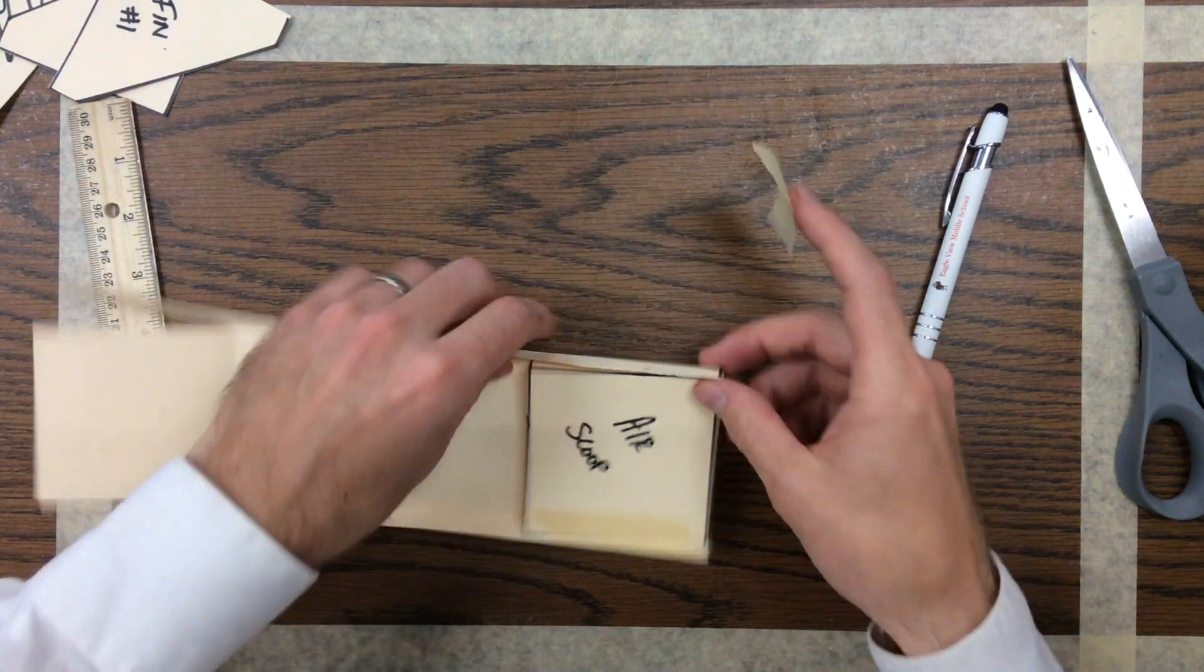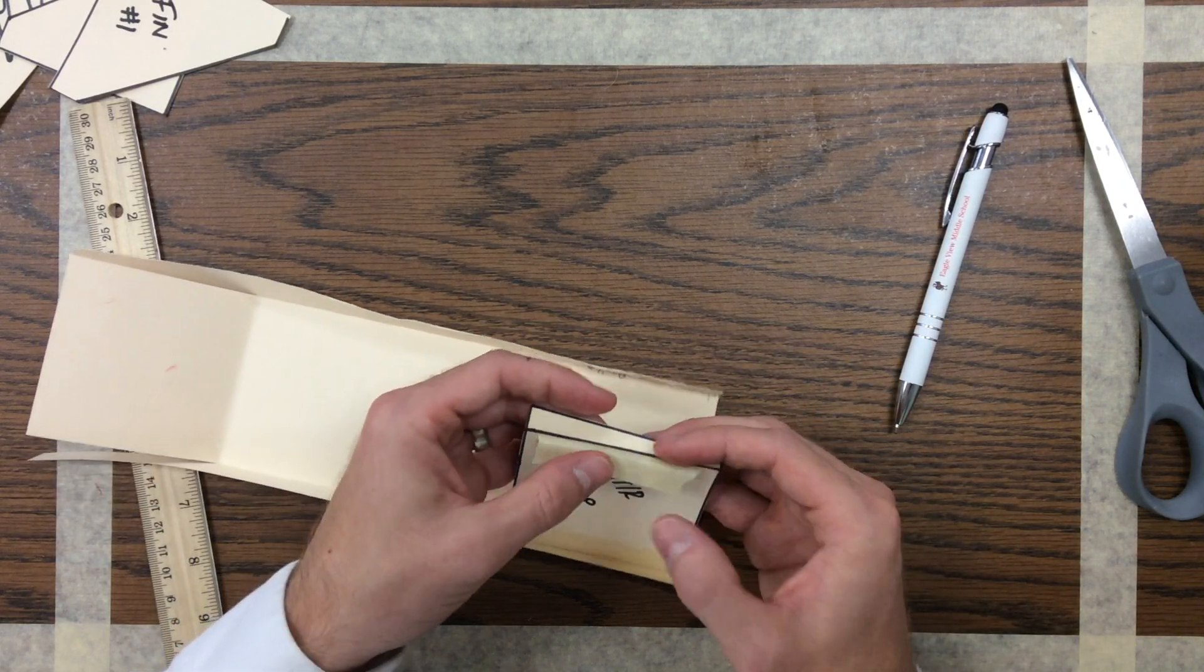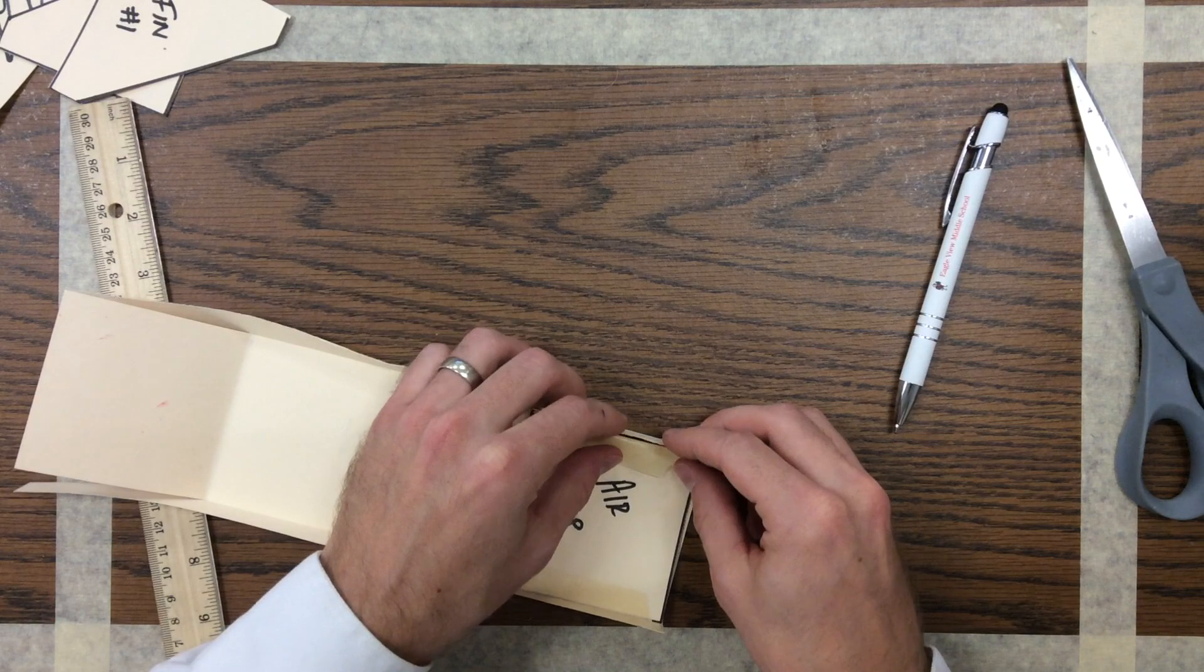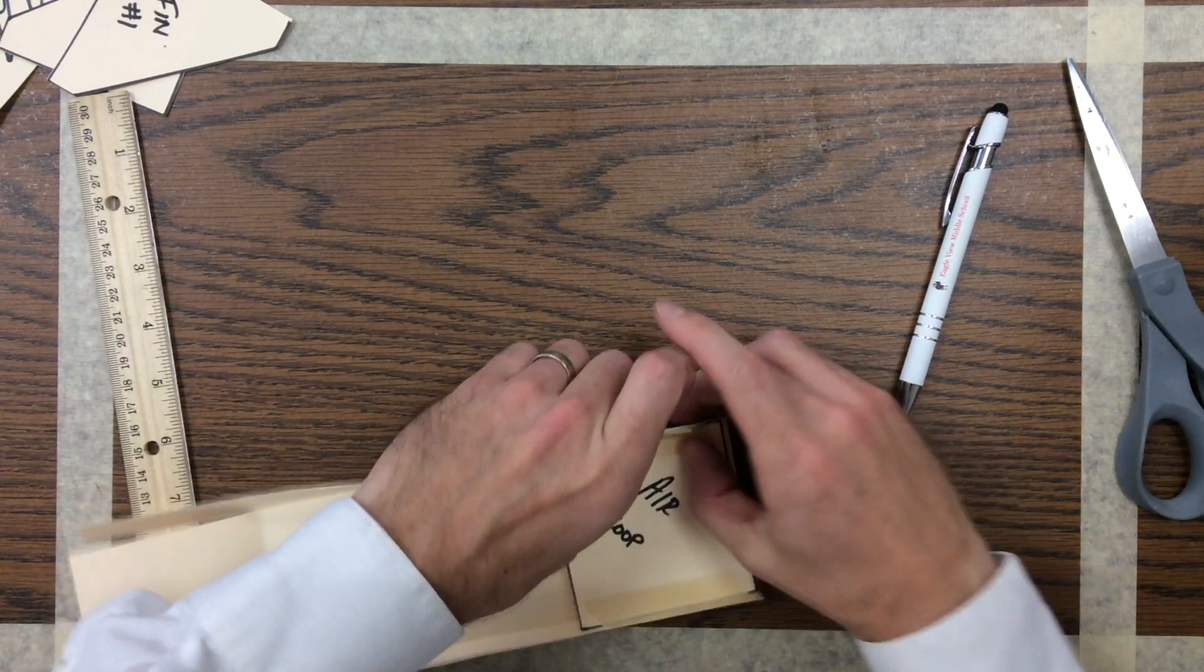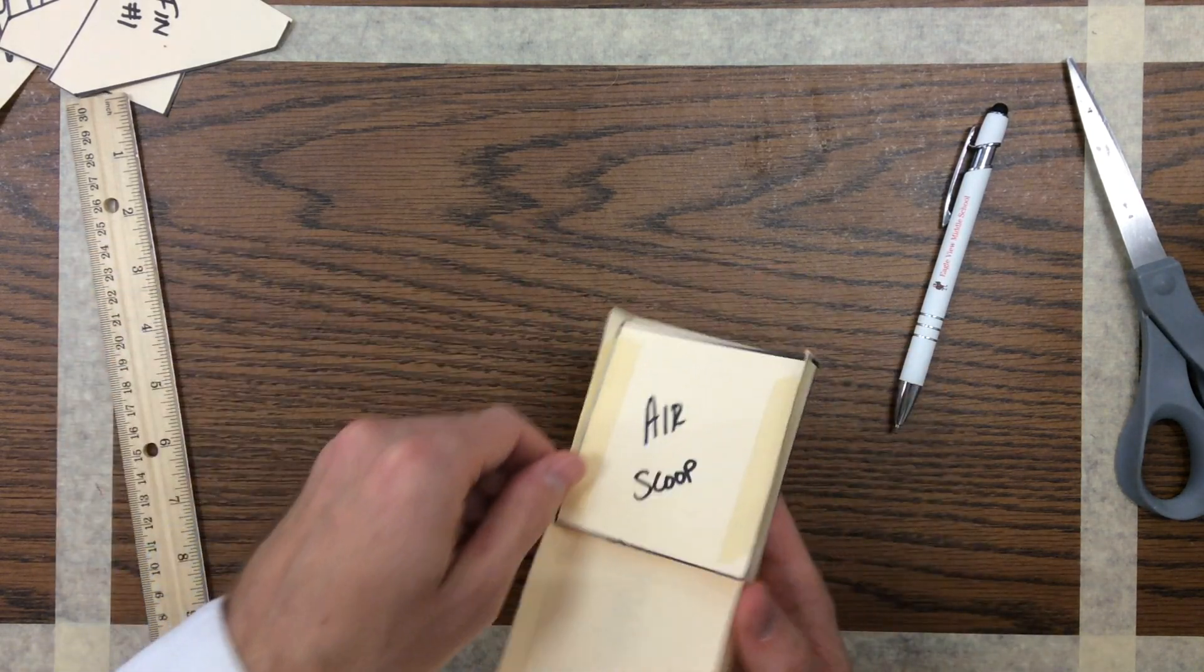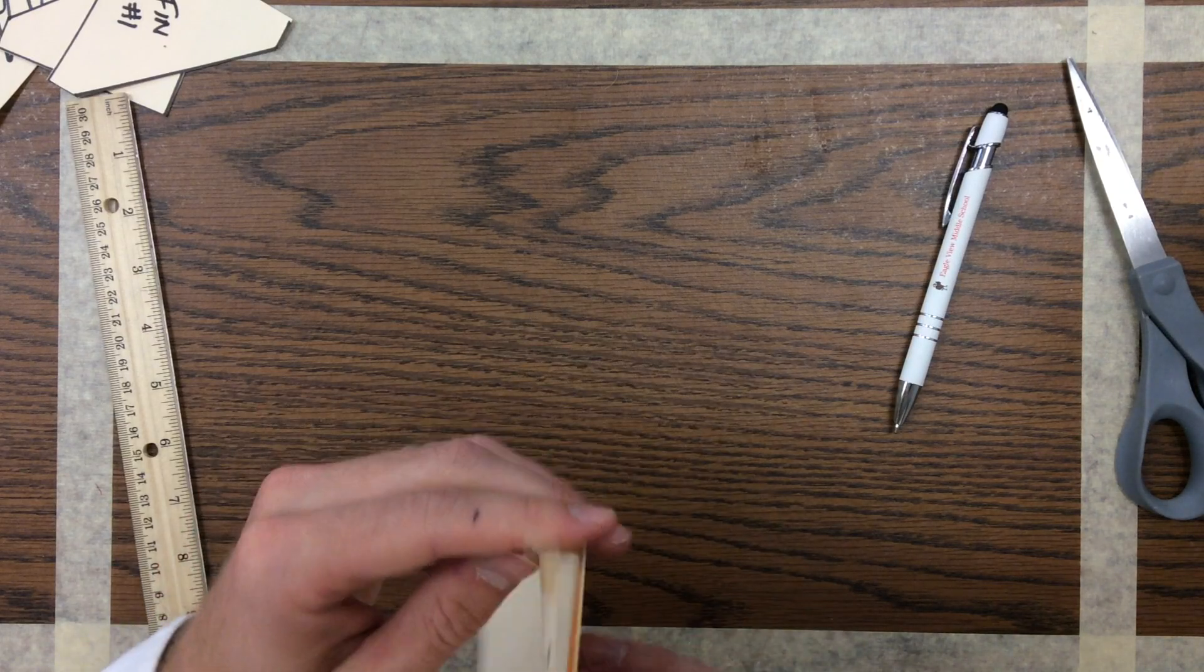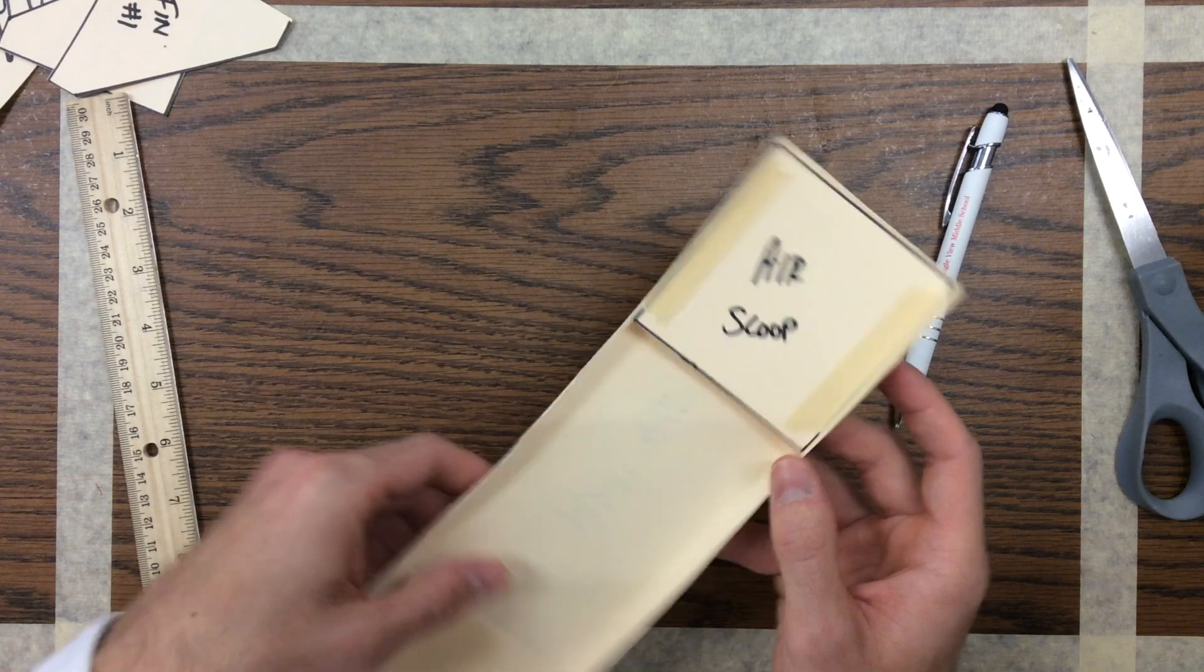To secure the other side I'm going to do the same exact thing. Put the tape on the air scoop, fold the tape back, put the air scoop down, secure it on the inside, fold the tape around. So at that point your air scoop is in secured. Notice the shorter part is at the front, the taller part is at the back.